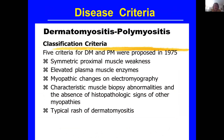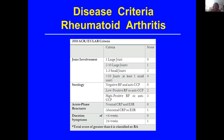Another disease criteria is dermatomyositis or polymyositis. These are old criteria from 1975: you had to have muscle weakness, elevated muscle enzymes, changes on EMG tests, characteristic muscle biopsies, or a typical rash of dermatomyositis. Many patients don't have enough criteria to be classified as dermatomyositis. Rheumatoid arthritis has a similar weighting for the type of joint involvement and serology, and again many patients have arthritis but don't meet the criteria for rheumatoid arthritis.